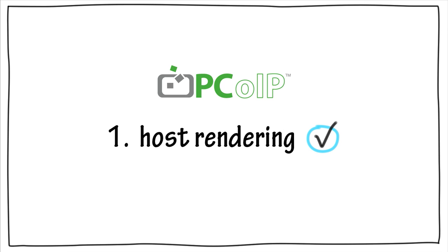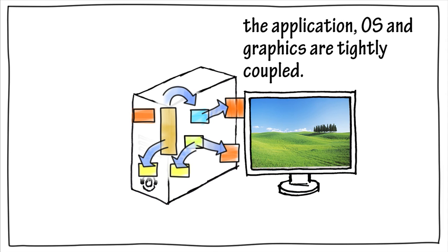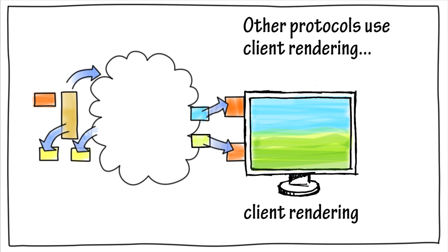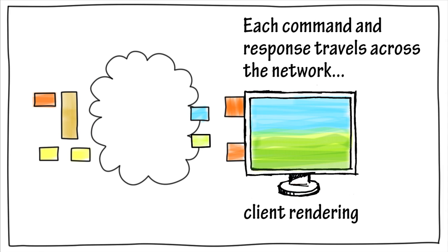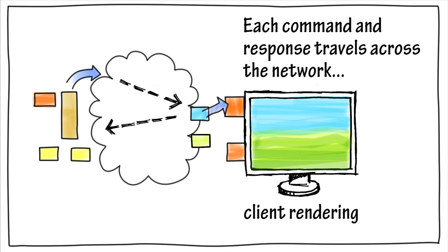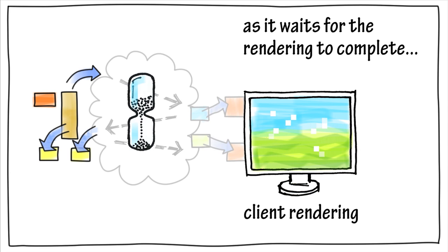First, the PC over IP protocol is based on host rendering. In a regular PC, the application's OS and graphics drivers are tightly coupled to the display and are optimized for performance. Other protocols use client rendering, which separates these components by a network. To render an image, each command from the host and response from the client has to travel across the network,